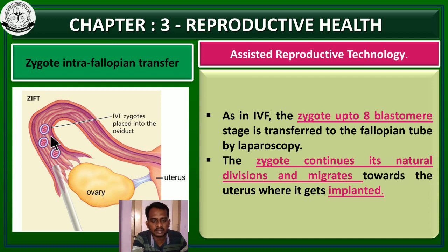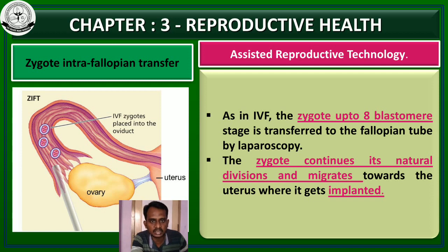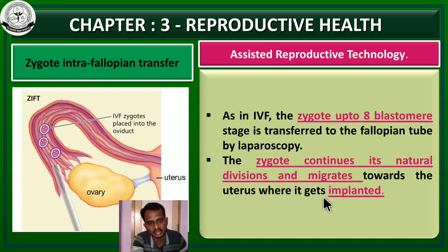What is the advantage of this technique? If the sperm and egg are implanted into the fallopian tube as gametes, there is less chance for fertilization. But in the case of in vitro fertilization followed by ZIFT, the fertilization chance is higher than gamete intra-fallopian transfer. The success rate of implantation is also higher in zygote intra-fallopian transfer. That is the reason some couples choose in vitro fertilization combined with ZIFT. The zygote then continues its natural division and migrates towards the uterus where it gets implanted.